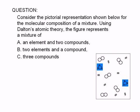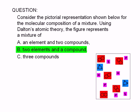Molecules of the compound are made of two elements in a well-defined ratio. Therefore, the correct answer is B: Two elements and a compound.